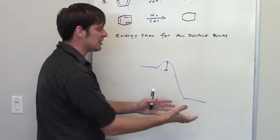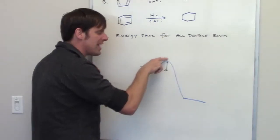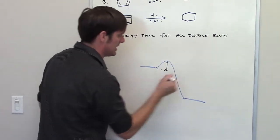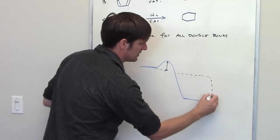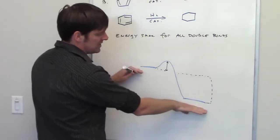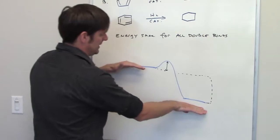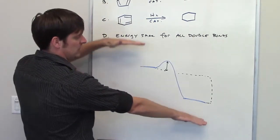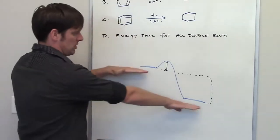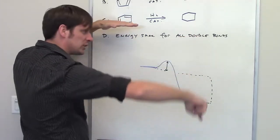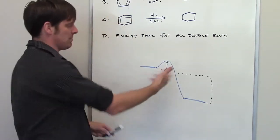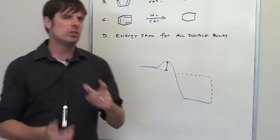If my product is at a lower energy level than my reactant, once I get over that hill I get back all the energy I invested plus the additional energy difference. The difference in energy levels between reactant and product is the amount of energy I get out. The bigger the difference, the more negative the energy — the bigger the payout for my initial investment.